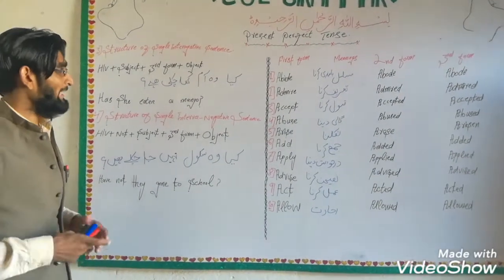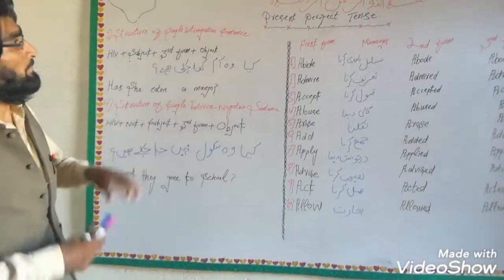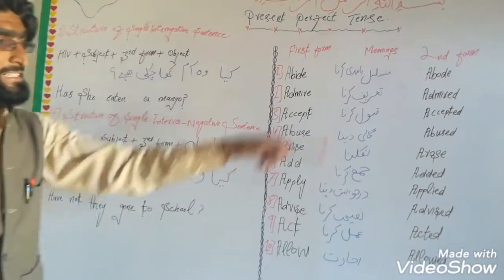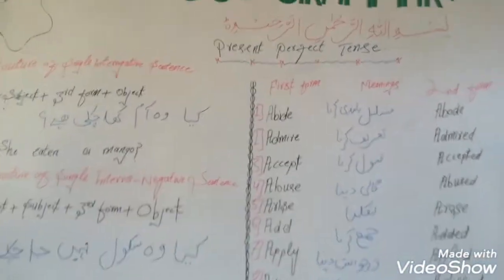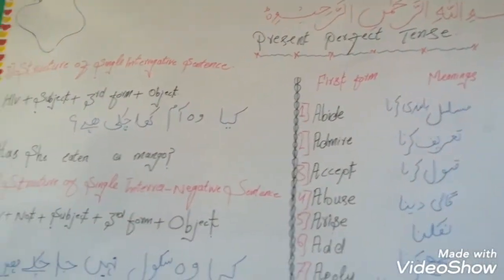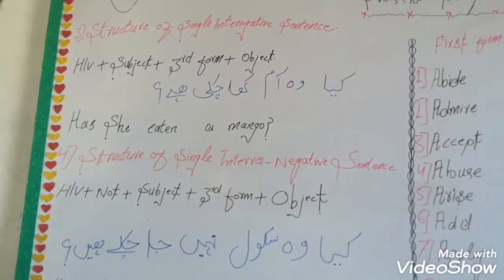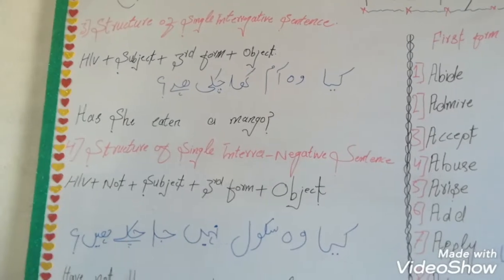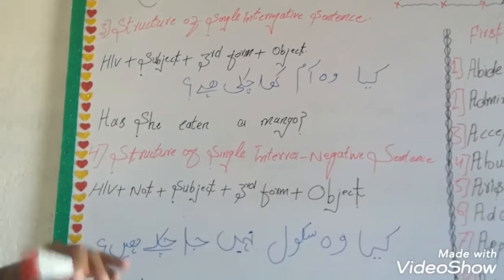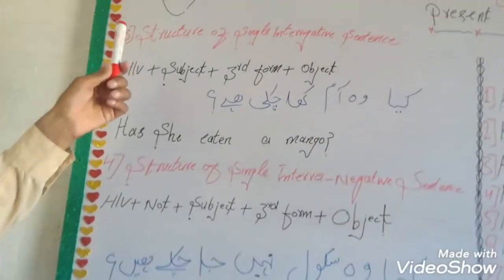We have taught two structures of the present perfect tense, and four structures have been remaining. So today we are uploading the two structures, structure number third and structure number four.